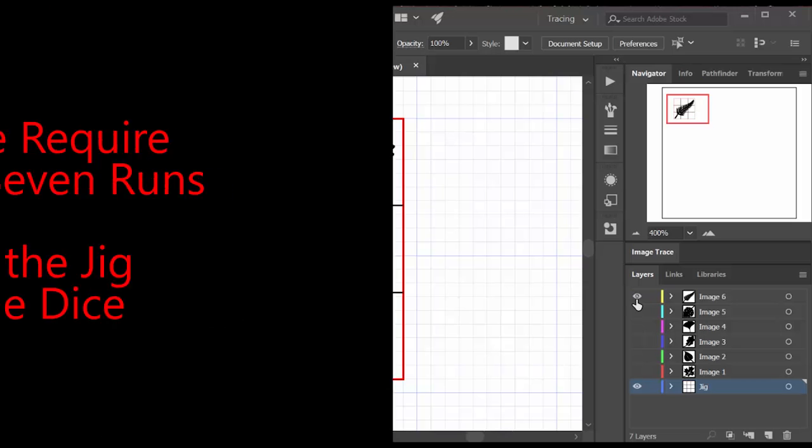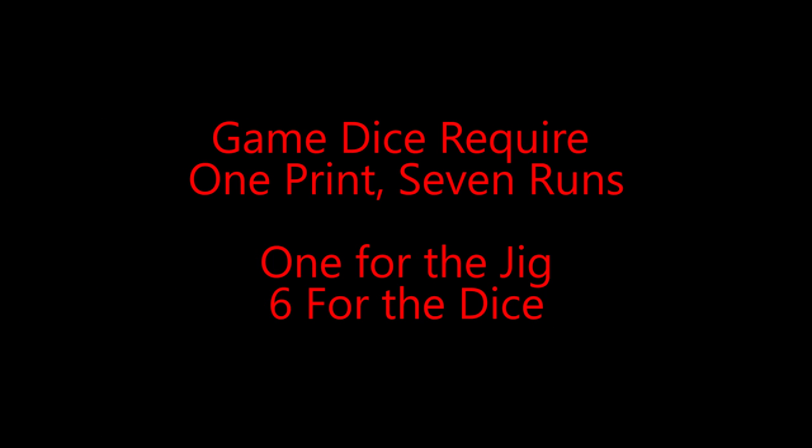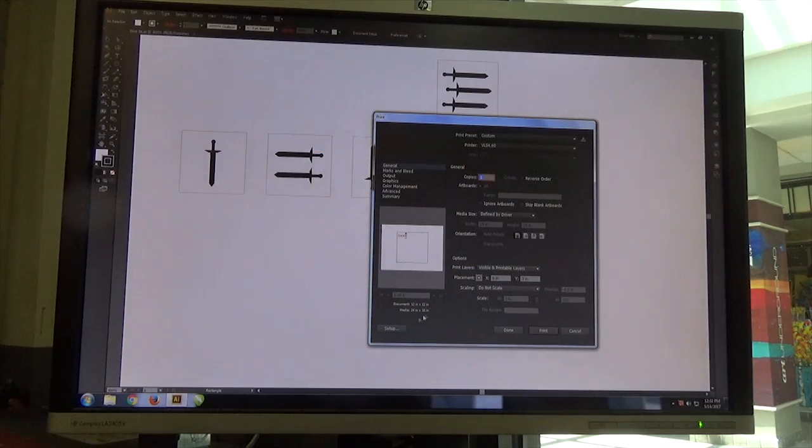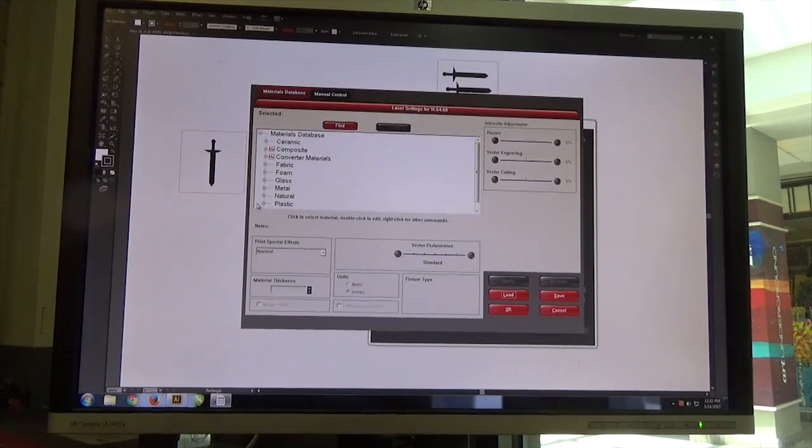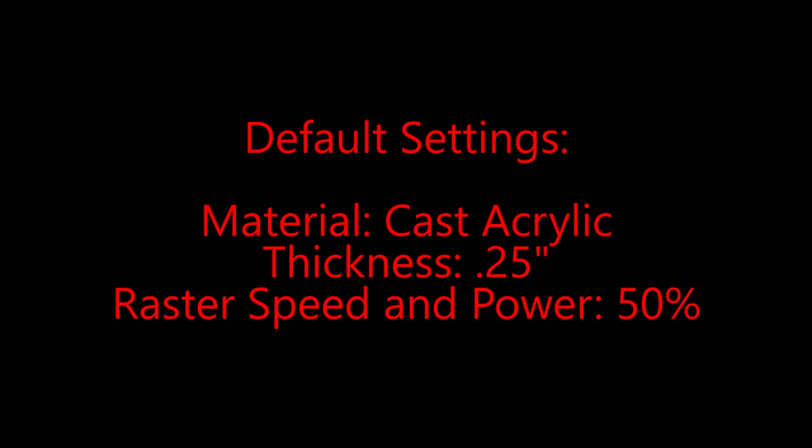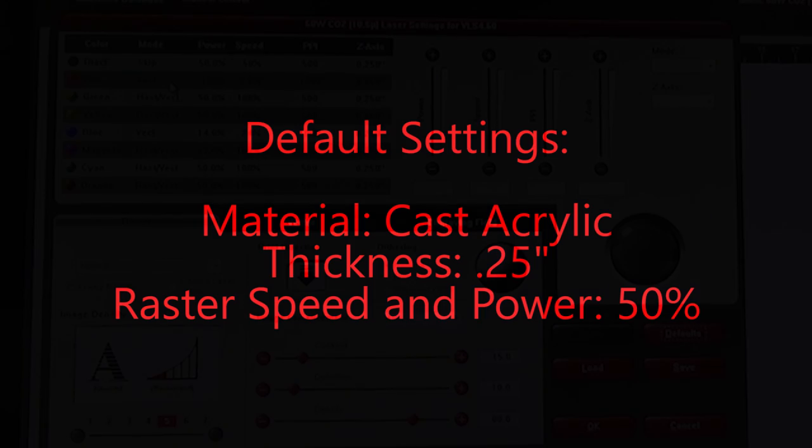So the game dice has everything it needs in one print. I just run it seven times. One to cut the jig, and six to engrave the different sides of the dice. When I send my project out of Illustrator, I have an option in the print preferences to set my defaults. I use this to establish the most common settings. So I say it's cast acrylic. I set the thickness to a quarter inch, because that's what my jigs are cut out of. And I set the raster speed to 50-50, which is actually a deep engraving, much deeper than the standard default settings.